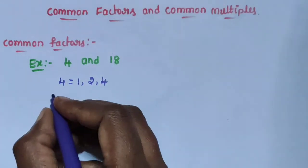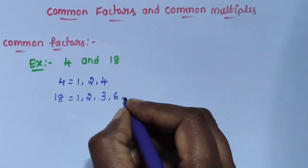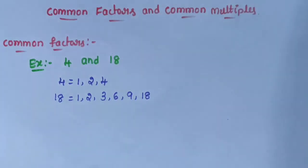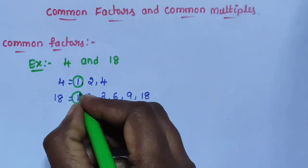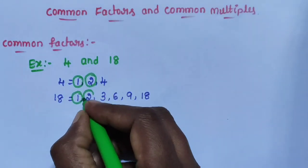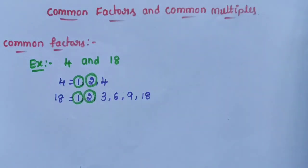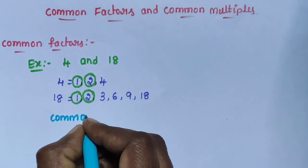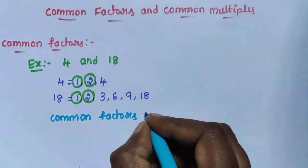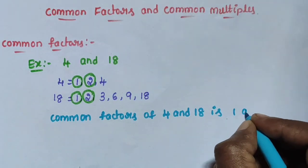And write the factors of 18. Factors of 18 are 1, 2, 3, 6, 9, 18. The numbers 1 and 2 are factors of both 4 and 18. They are common factors of 4 and 18. The common factors of 4 and 18 are 1 and 2.